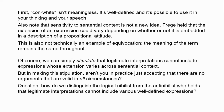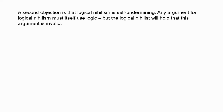Another objection to logical nihilism — an objection to nihilism in general rather than simply to Russell's specific argument — is that it is self-undermining, because any argument for logical nihilism must itself use logic. In giving any argument, we must make an inference from a set of premises to the nihilist conclusion. So if logical nihilism is true, this undermines the force of any argument in favour of it. The logical nihilist must accept that the argument for nihilism is invalid, but if the argument's invalid, we can just reject it.